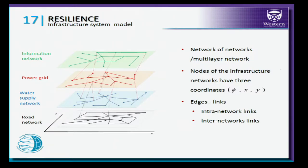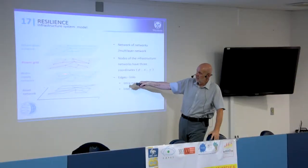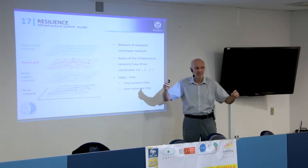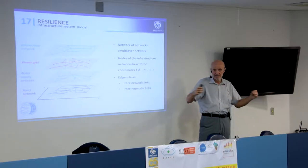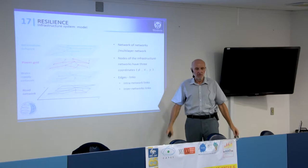So we have a situation like this. One example is the city road network, water supply network of pipes, power grid, and let's say an information network of nodes used for sharing information. Logical links exist between the layers, as well as the system within each layer is represented as a set of nodes and edges that connect the nodes.